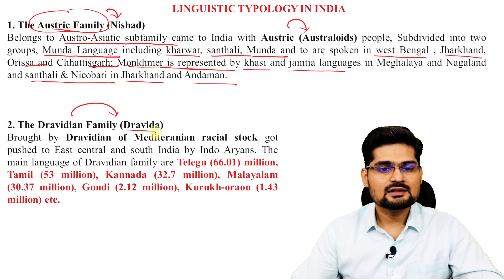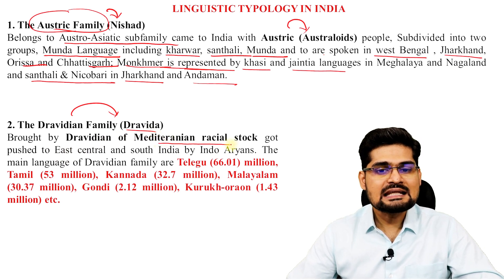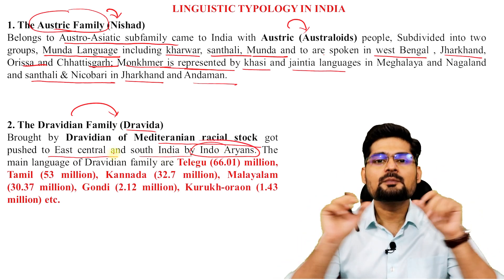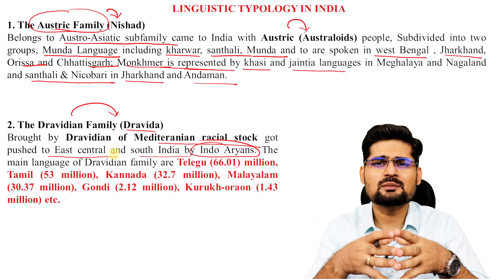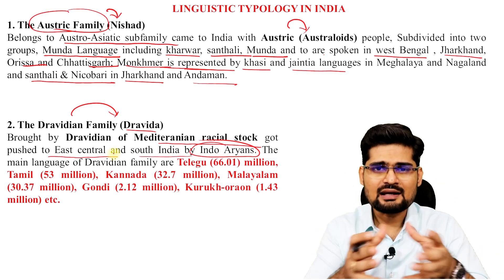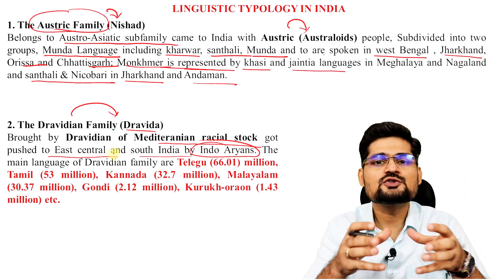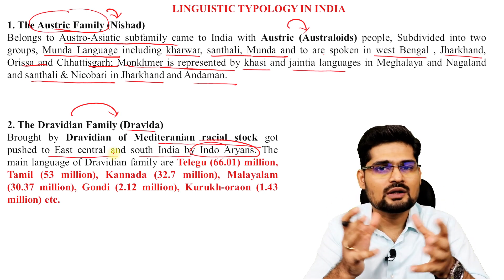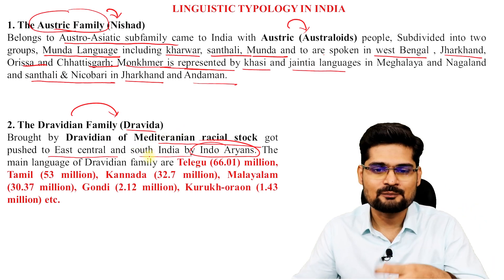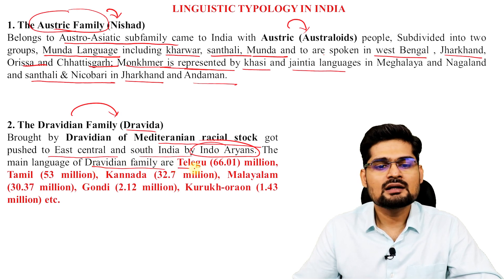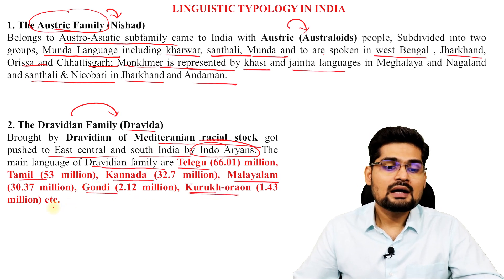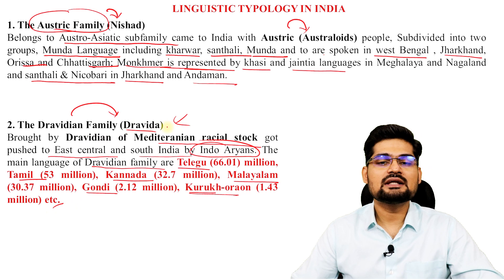The Dravidian family — the Dravida. Dravidians of Mediterranean racial stock were pushed to East, Central, and South India by Indo-Aryans, according to the popular theory of Max Muller — which has been criticized by many scholars, though it is still applied in knowledge forms where we study. The main languages of the Dravidian family are Telugu, Tamil, Kannada, Malayalam, Gondi, Kurukh, and several others.